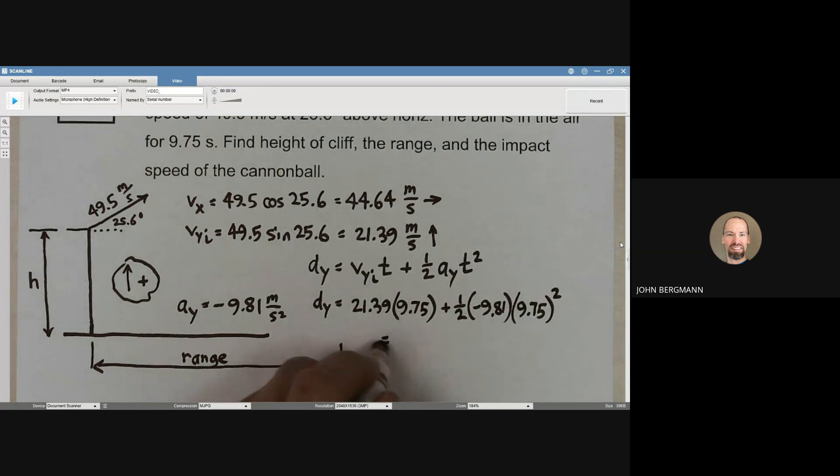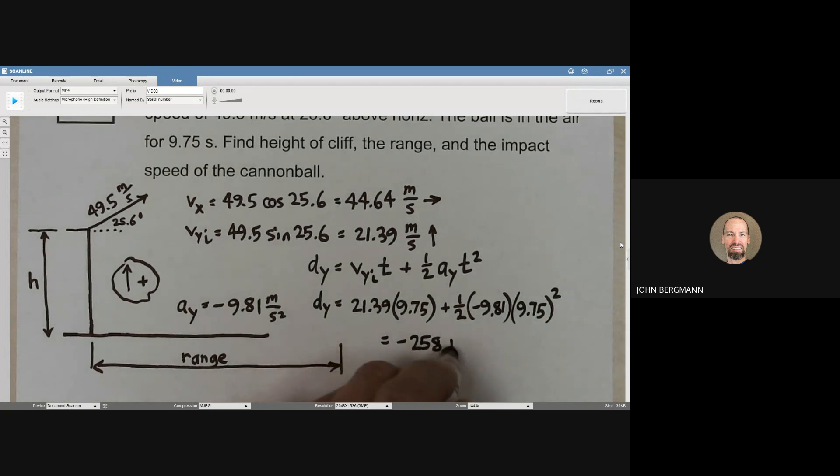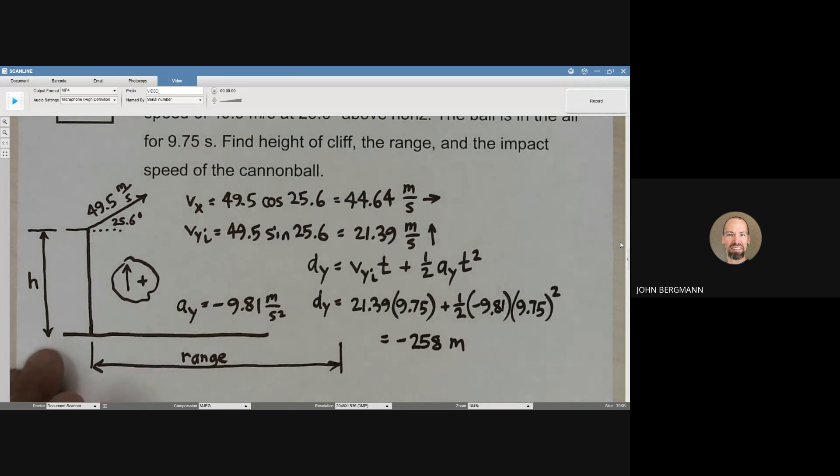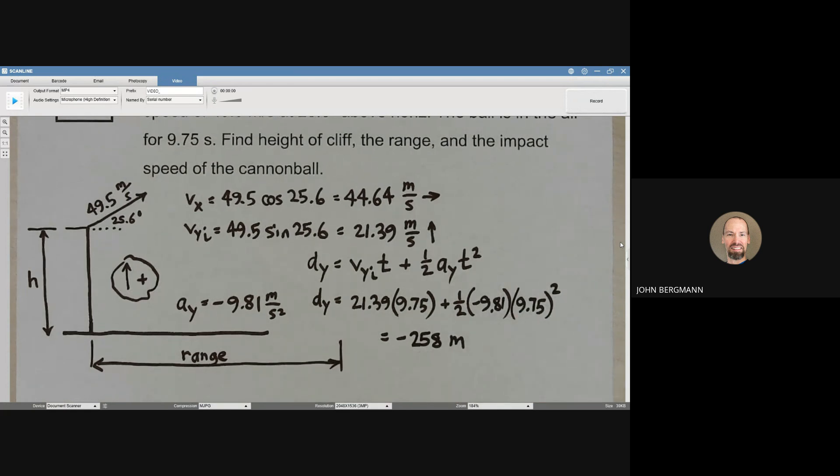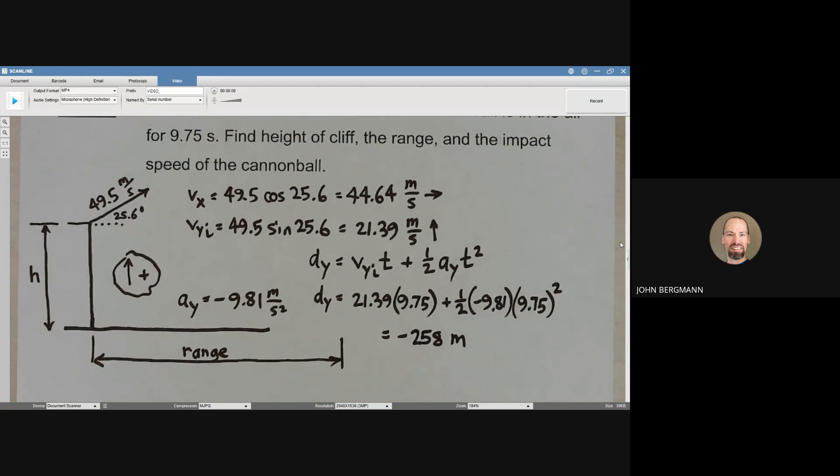When you calculate this out, what you get is negative 258 meters. Now, what does that mean? What it means is that the vertical elevation has changed by this much in 9.75 seconds. Which means that the height of the cliff is 258 meters.